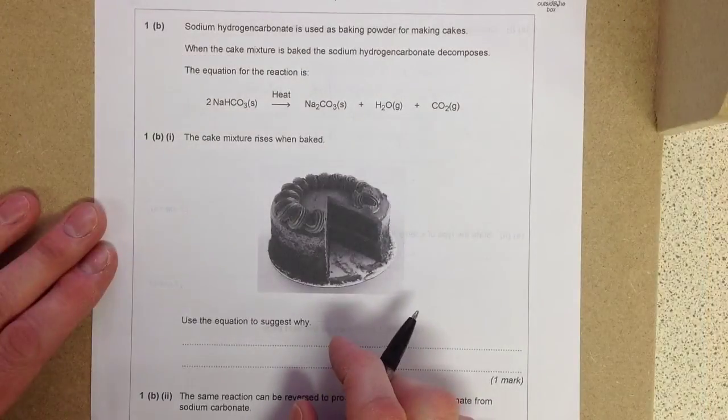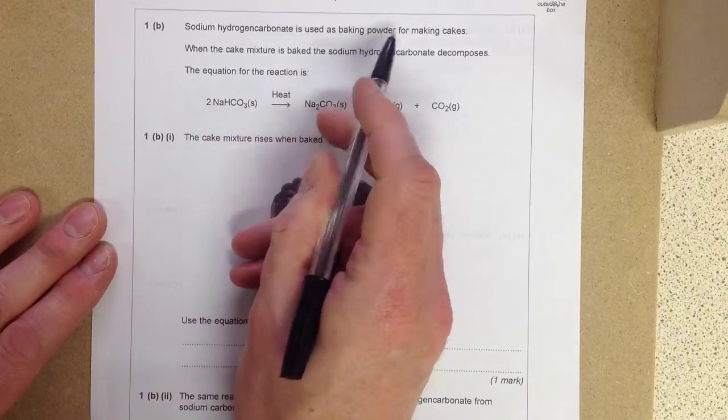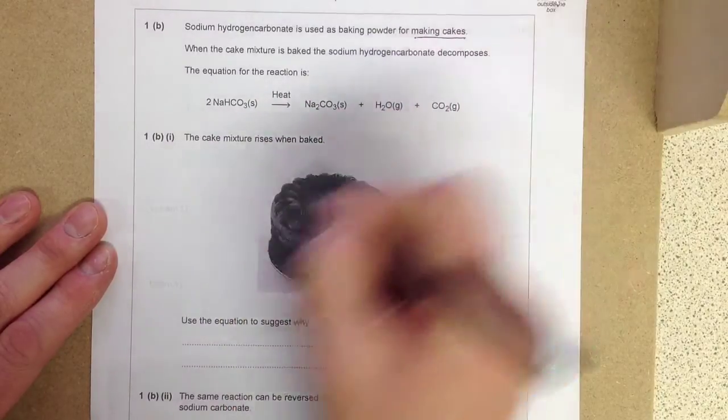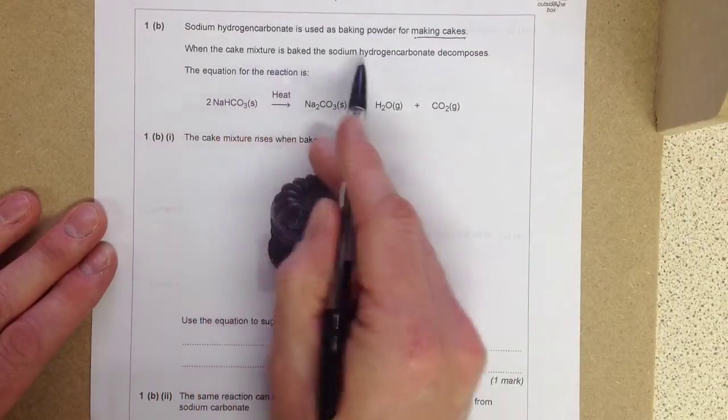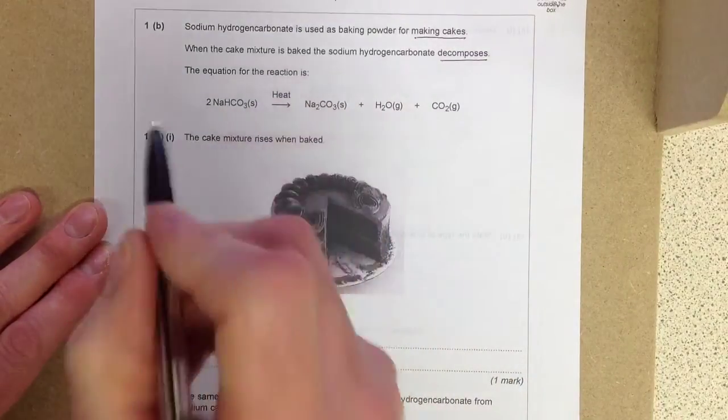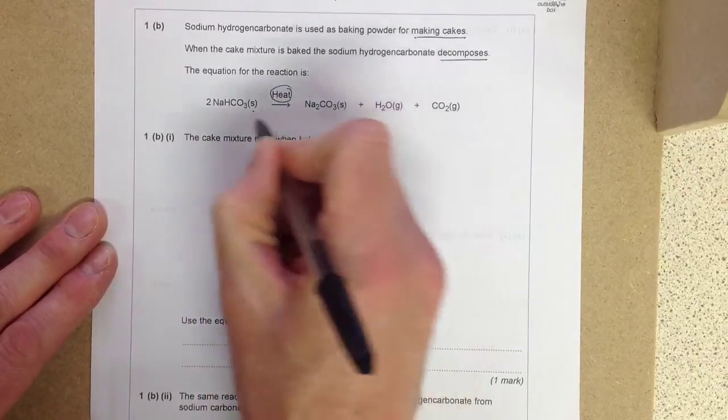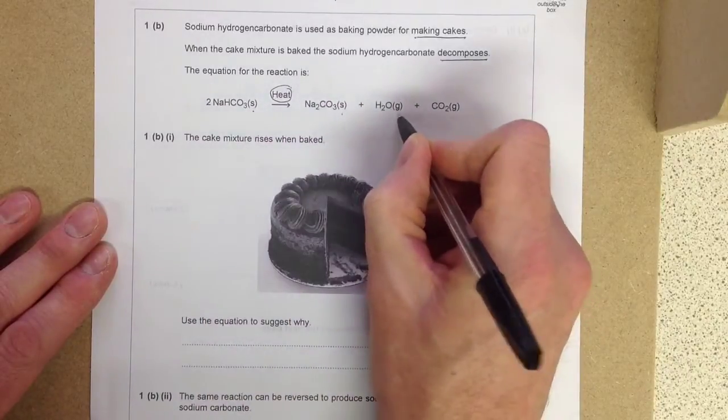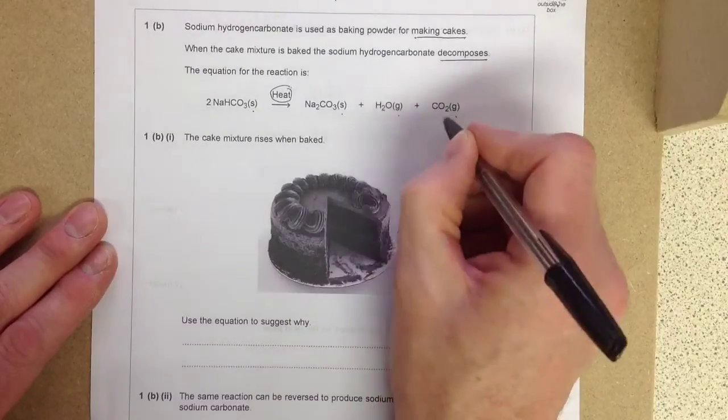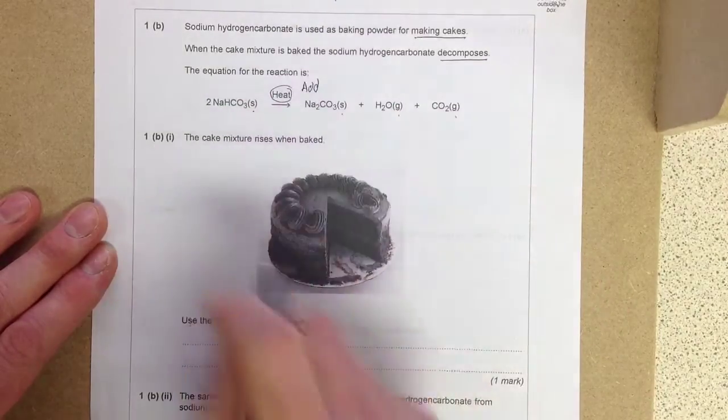Right, here's the next question. Question 1B, sodium hydrogencarbonate is used as baking powder for making cakes. When the cake mixture is baked, sodium hydrogencarbonate decomposes, the equation's here. Good thing on this equation, it's got this word heat. It's also got the state symbols: solid, solid, gas, gas. So gases are being produced, and you have to add heat to make this reaction work.